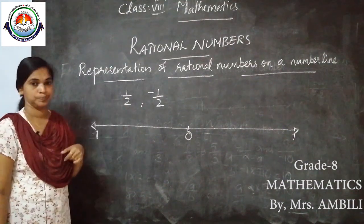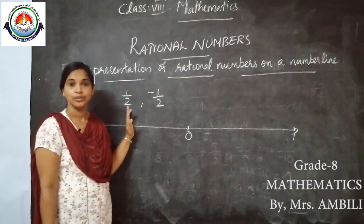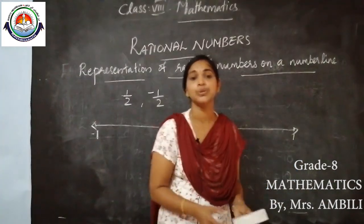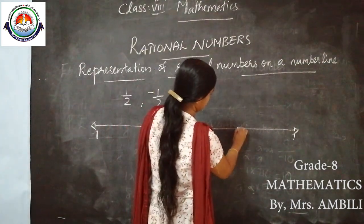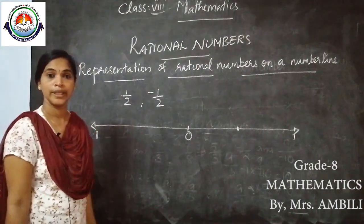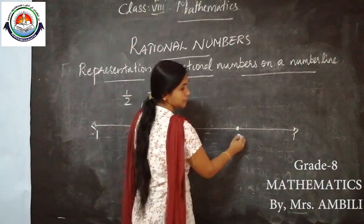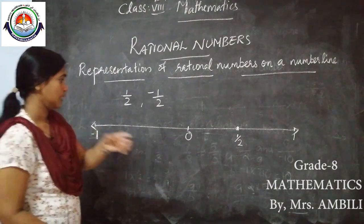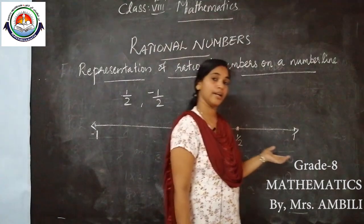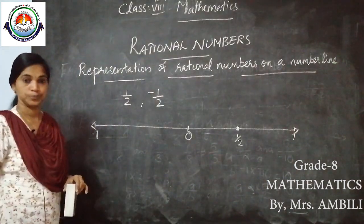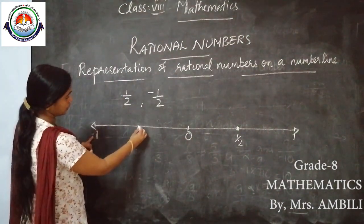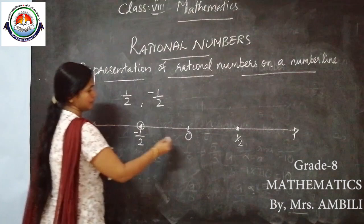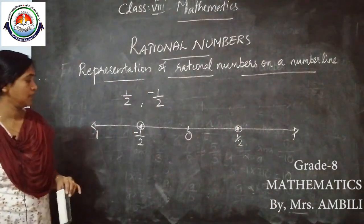To represent 1/2, look at the denominator — it is 2. So we divide the portion from 0 to 1 into two equal parts. The first part is 1/2 and the second part is 2/2 = 1. Similarly, we divide 0 to −1 into two equal parts, and we can represent −1/2 there. So these are the points 1/2 and −1/2.